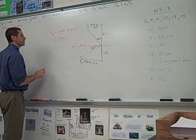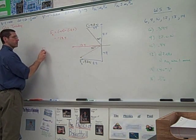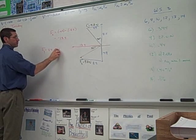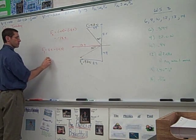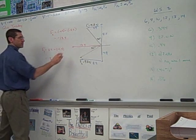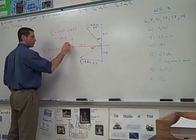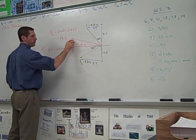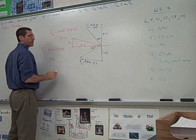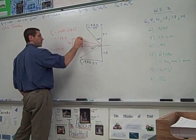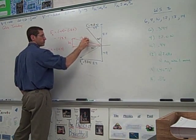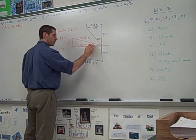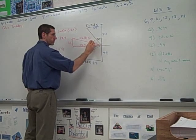For the x component, and then the y is 8.5 plus negative 4.9 which comes to 3.6, so then you would come up 3.6 and now your resultant is drawn there. If you do the Pythagorean theorem you get 13.87 newtons for your magnitude, and then if you find this angle right here you get 15 degrees.